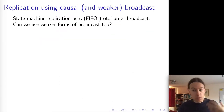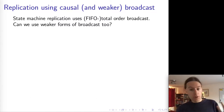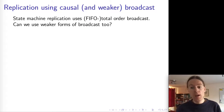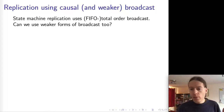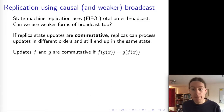That is how Total Order Broadcast is used — it's clearly a good way of implementing replication. We also discussed weaker forms of broadcast: causal broadcast, FIFO broadcast, reliable broadcast, and best-effort broadcast. Can we use those as well for implementing replication? The answer is yes, we can — it just requires a little bit more care.